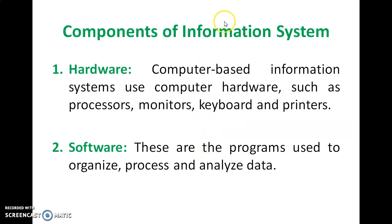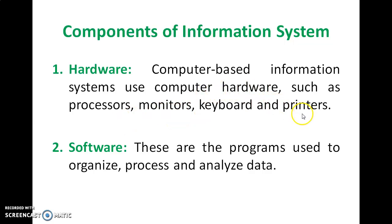Next, components of information systems. The first one is hardware — computer-based information systems use computer hardware like processor, monitor, keyboard, and printers. Software — these are programs used to organize, process, and analyze data.